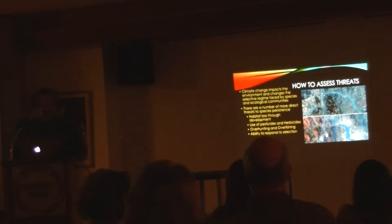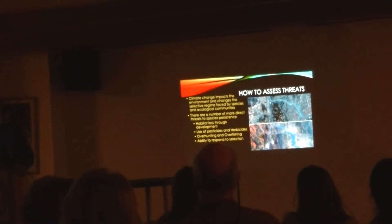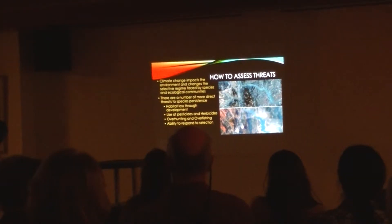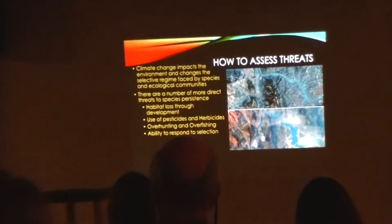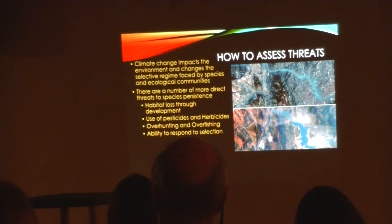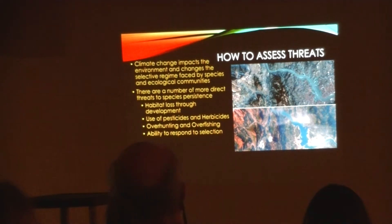So how do we assess threats? Climate change impacts the environment and changes the selective regime that organisms are experiencing, so that species and ecological communities face major changes in their environment. This is not an example of climate change — this is the Three Gorges Dam in China, which is to me one of the major events. Quite often it becomes difficult to tease out the effects of other sorts of things as well as climate change when you're looking at changes in communities or possible extinctions. But there are a number of threats that are more direct to species persistence than climate change will be.